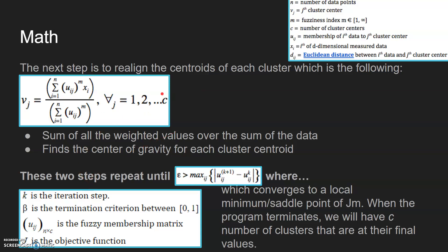These two steps repeat until this is over max UIJ, where K equals the iteration step, beta is the termination criterion between 0 and 1. UIJ of N by C is the fuzzy membership matrix.